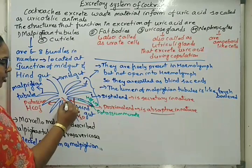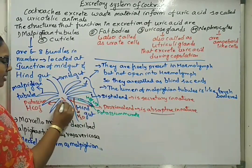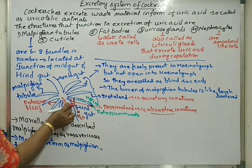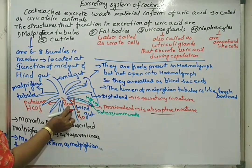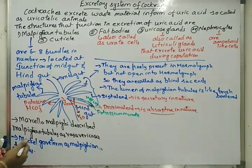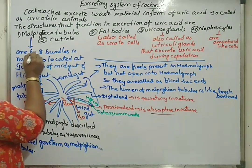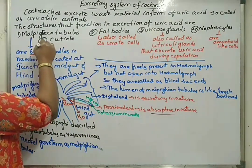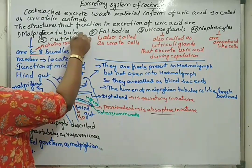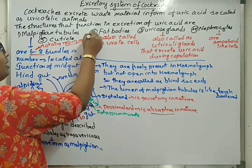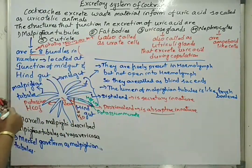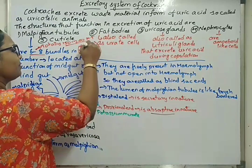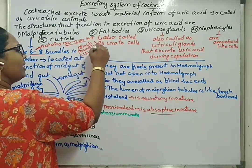By the time the material reaches the first part of hindgut, called the ileum, most of the water is already absorbed back into the body. The remaining water is further reabsorbed at the rectum. There are 6 to 8 bundles of Malpighian tubules, with approximately 150 to 200 tubules in total. Each bundle contains approximately 15 to 25 individual Malpighian tubules.